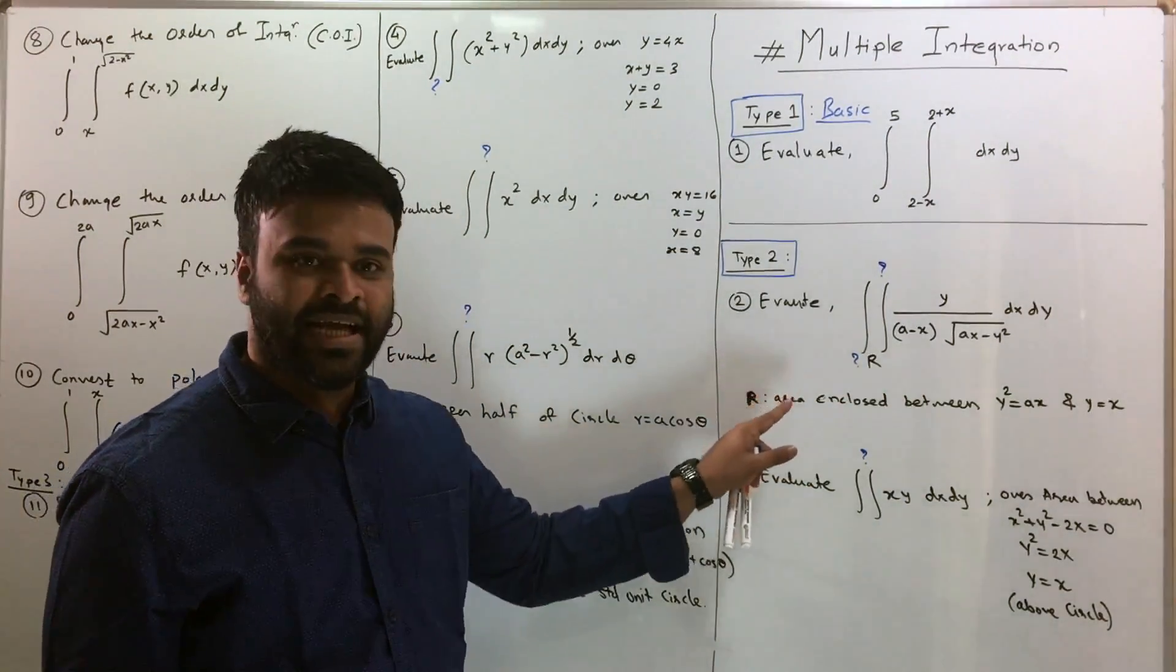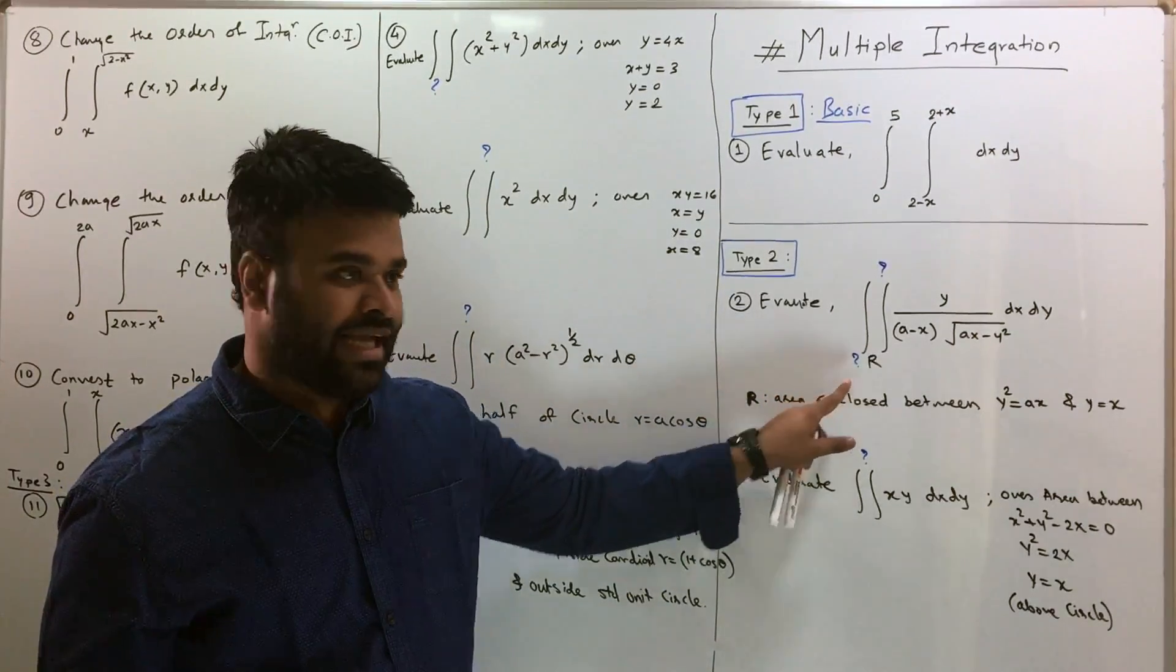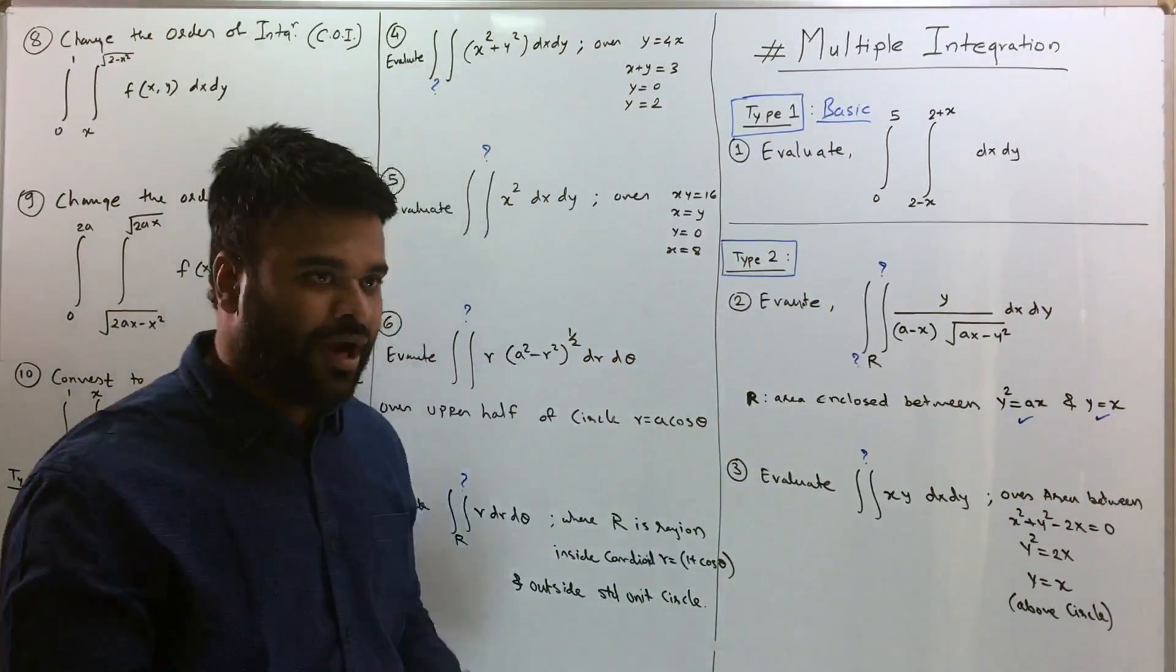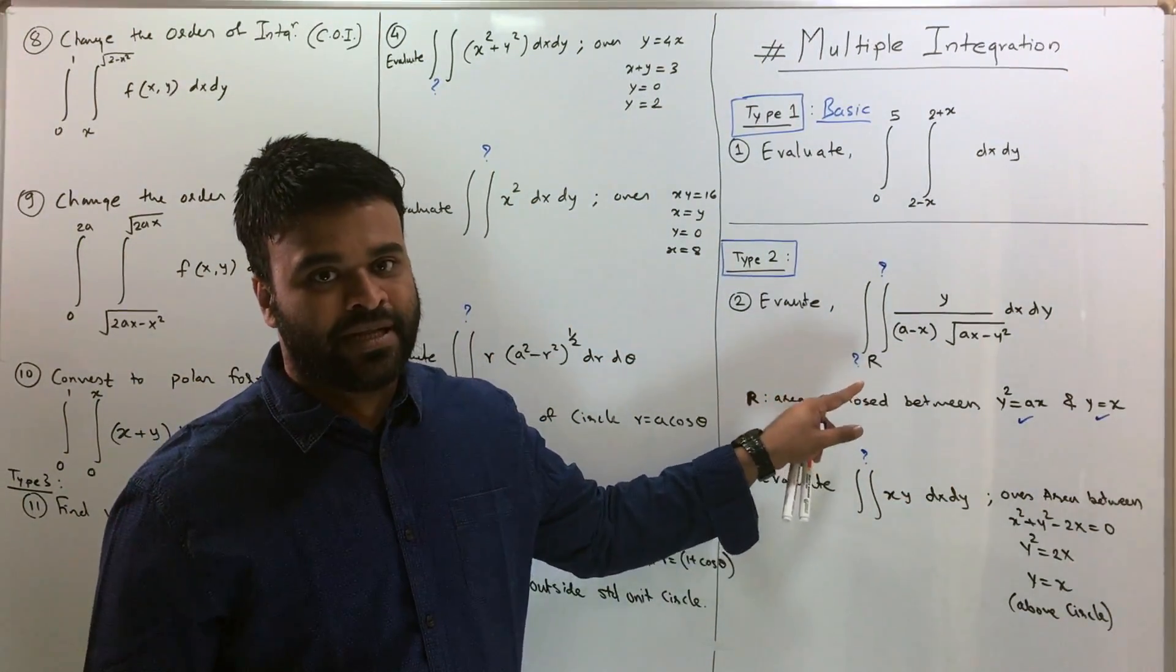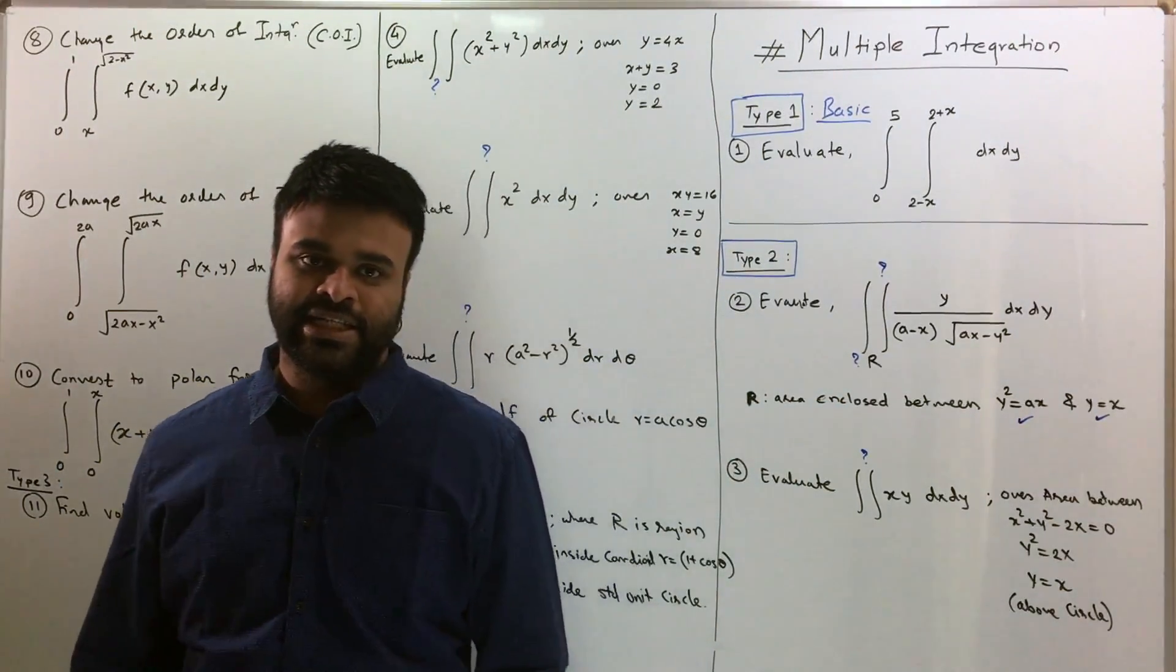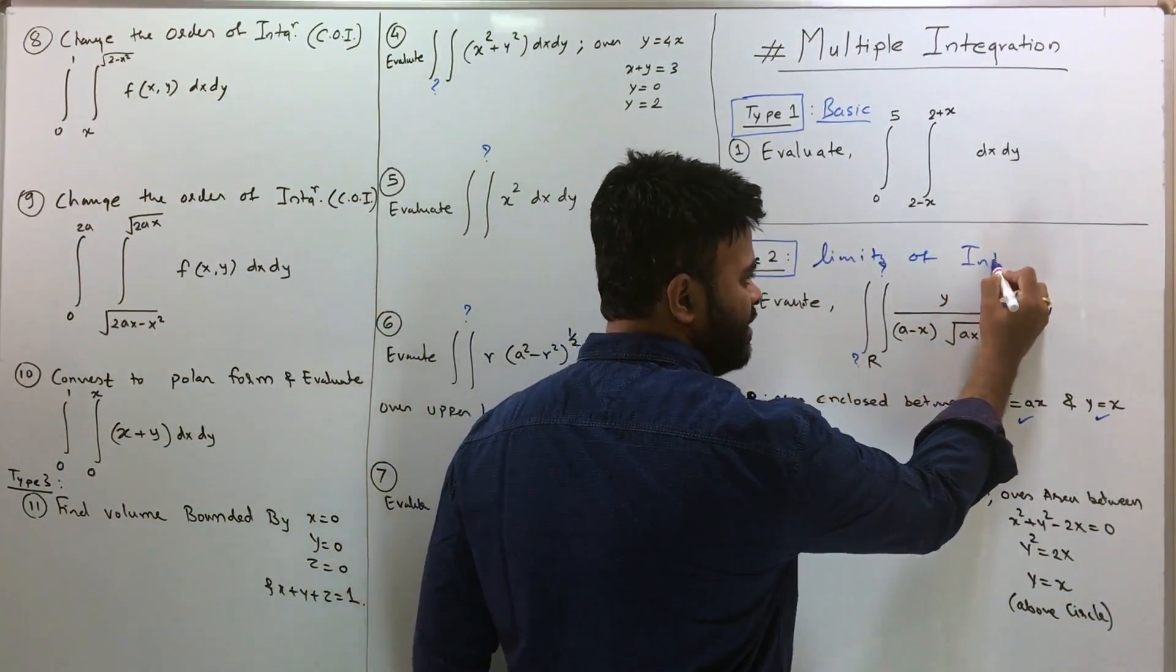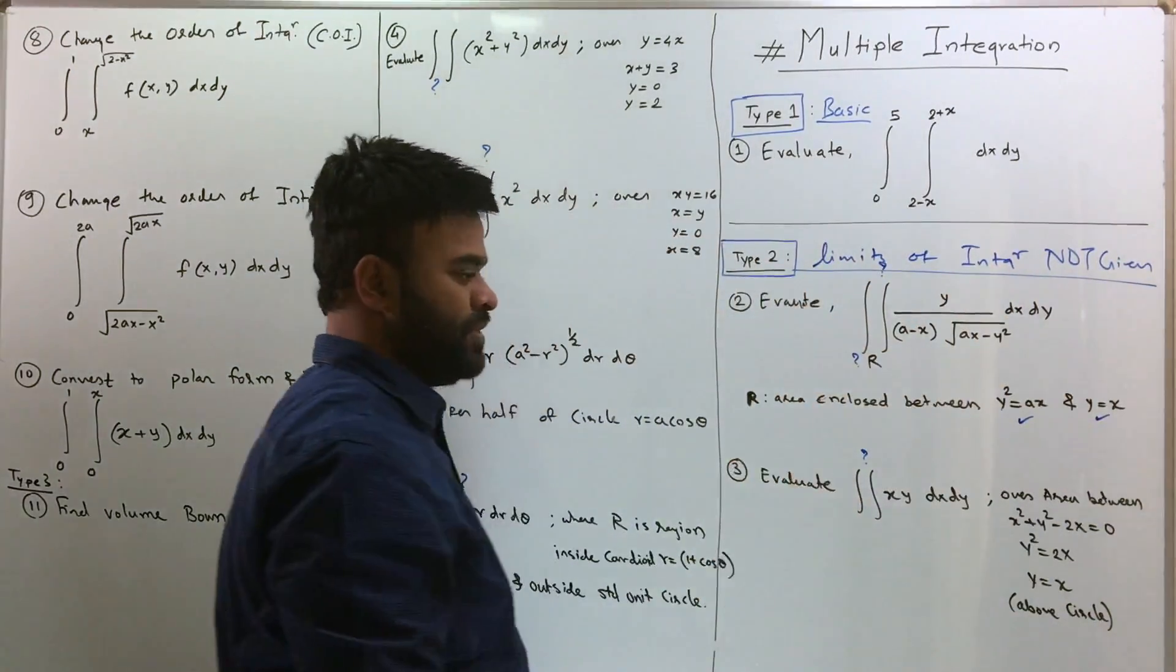Now how do you find out the limits? Well, it is mentioned that the integration is over the area or the region R and that area is given by these two curves like y squared equal to x and that's a straight line there. So you have to figure out the area first, from the area obtain the limits and once you obtain the limits, solve the integral is what type 2 is going to be. So type 2 is typically limits of integral not given.